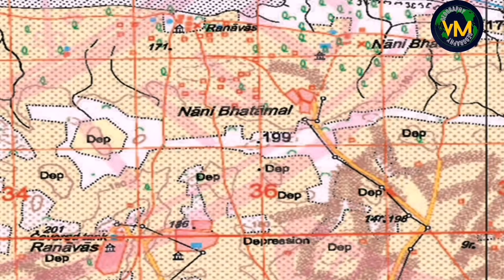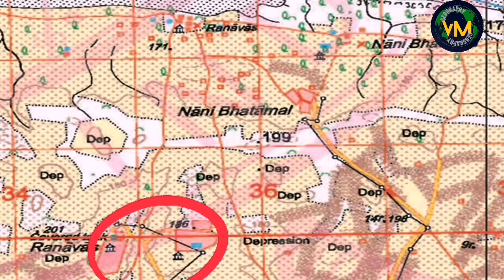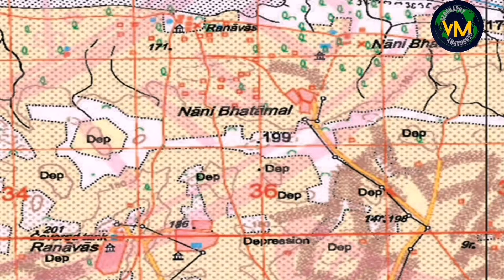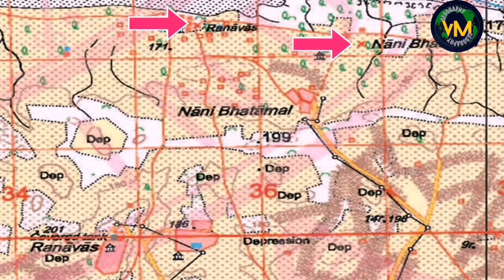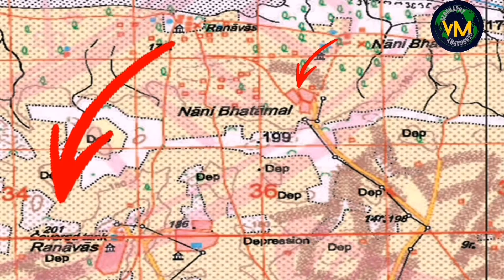In this map, you can see squares fully in red color — these are permanent huts. Squares having only the outline in red are temporary huts. Settlements like Nani Batamal and Ranavas are visible. In the northern part, the same names appear with an X mark, meaning those settlements are deserted. So it means the people have migrated from the northern part to the southern part.